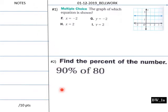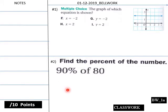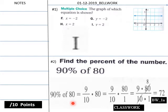Okay, welcome back for your solutions to today's Bellwork. I would be the solution here. Y equals 2. Y equals 2. It's a horizontal line. And then finding 90% of 80. We just multiply 80 times 90% and we get 72.